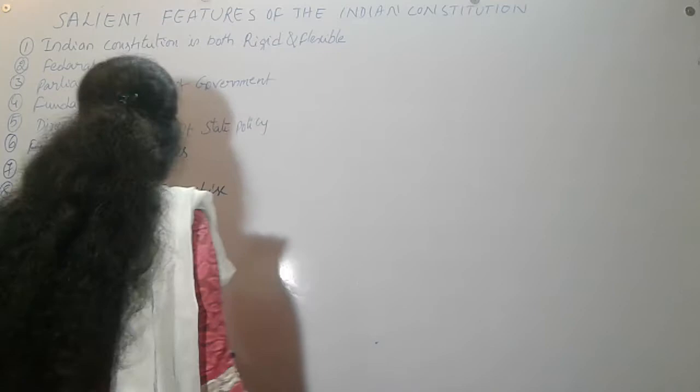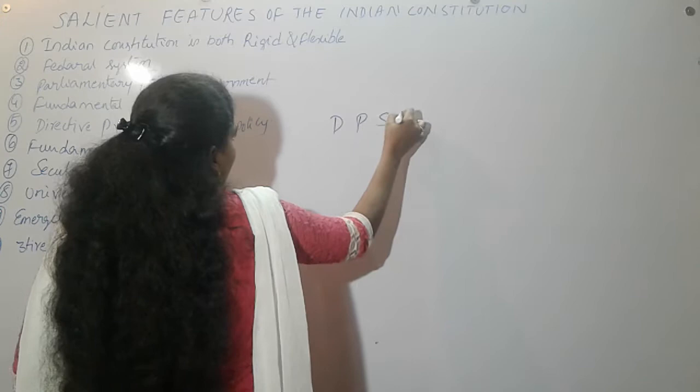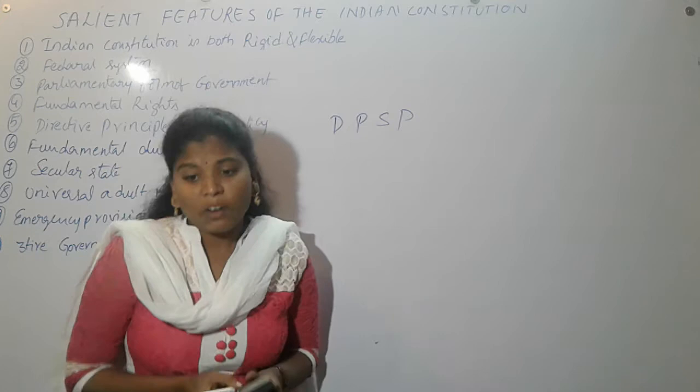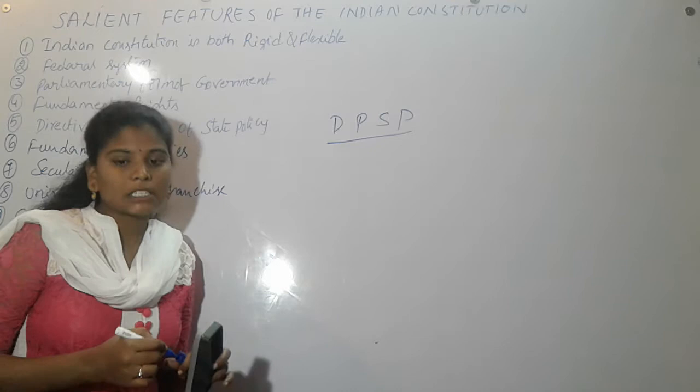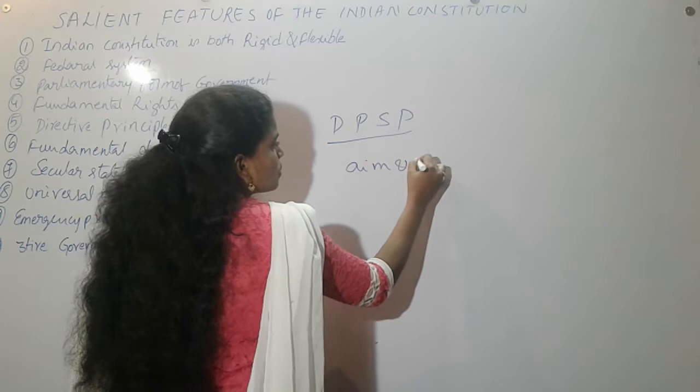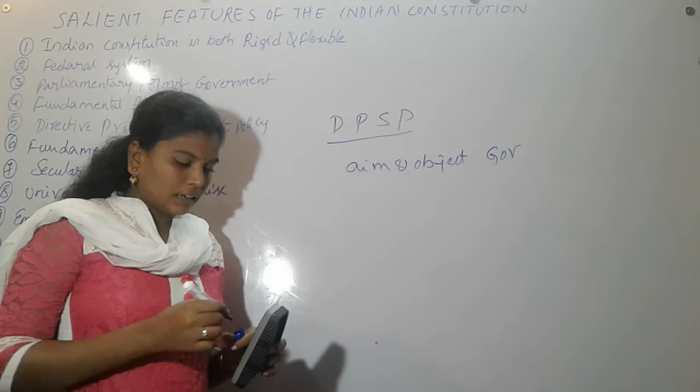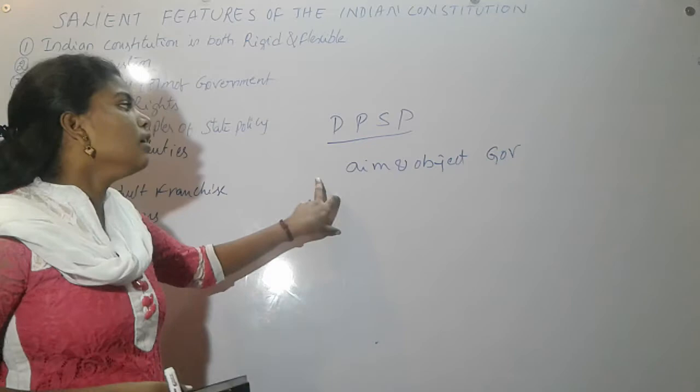The fifth feature is the Directive Principles of State Policy (DPSP). We cannot challenge the directive principles in any court of law, because these are only guidelines for the aims and objectives of the government.